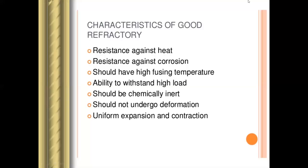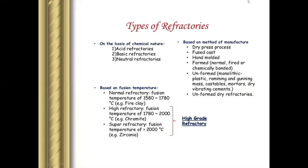Next is uniform expansion and contraction. The refractory material should have uniform expansion and contraction — meaning the same or similar expansion and contraction should occur. Based on different methods, refractories are classified. One is based on chemical nature, one is based on method of manufacture, and one is based on fusion temperature.